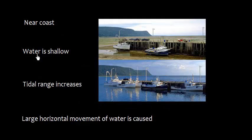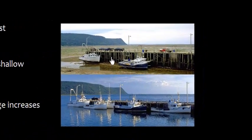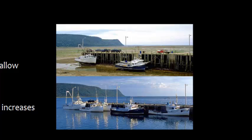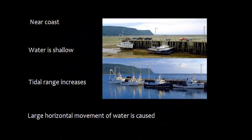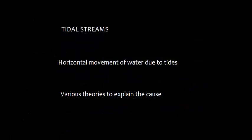Look at this example. Near coast, water is shallow, so the tidal range increases. In this picture, this is low tide. In this picture, however, when there is high tide, that's how it looks. So there is a large horizontal movement of water. The tidal streams are the horizontal movement of water due to tides.